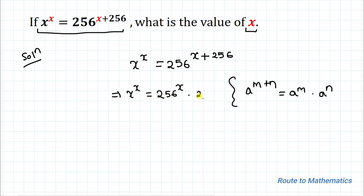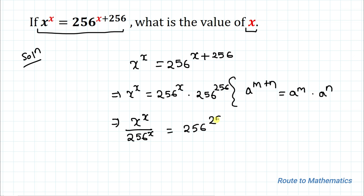Now by cross multiplication, let's bring 256 to the power x to the left-hand side. So we have x to the power x divided by 256 to the power x equals 256 to the power 256. This implies (x divided by 256) whole to the power x equals 256 to the power 256.